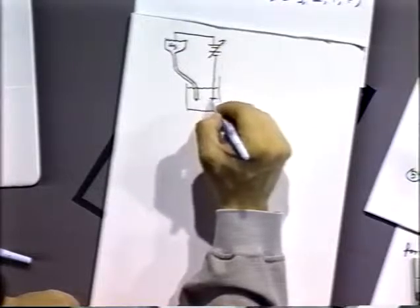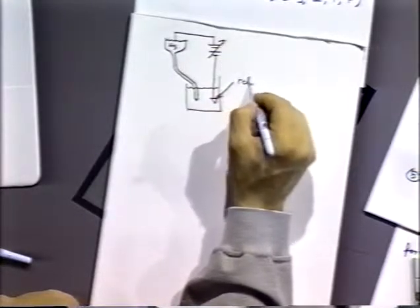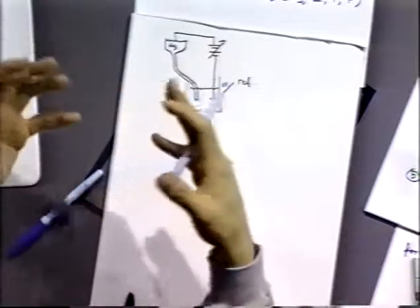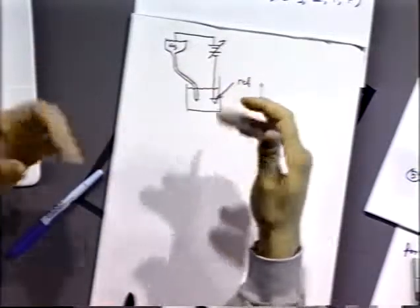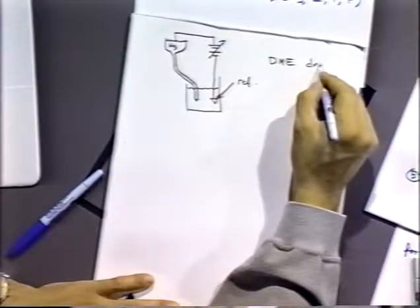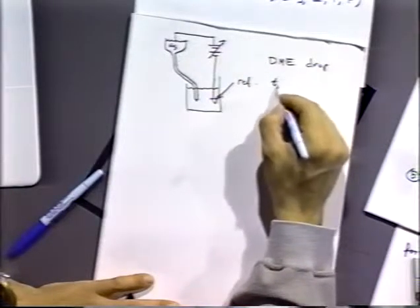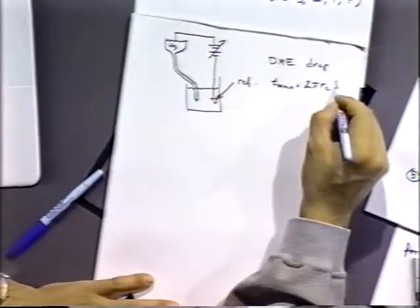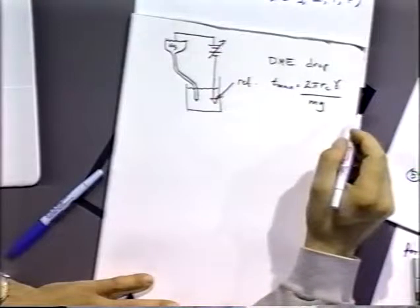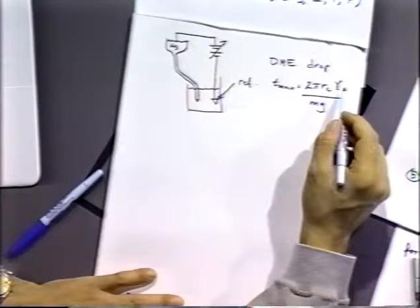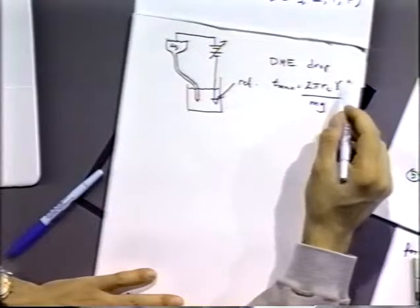We apply a potential to it versus a reference electrode and change the potential on our mercury. When we change the potential of the mercury, we're changing the surface energy of the mercury — we're adding or removing charge. So by changing the surface energy, we're changing the surface tension. Hierofsky noticed that the DME (dropping mercury electrode) drop time was in direct relationship to the surface tension, and he found T_max = 2πRC(λ/Mg), where RC is the radius of the electrode capillary, λ is the surface tension, M is the mass per second, and G is the gravitational factor.